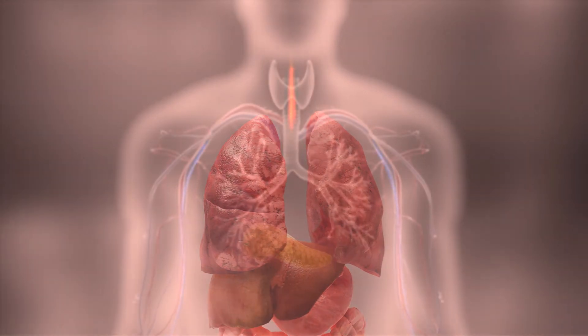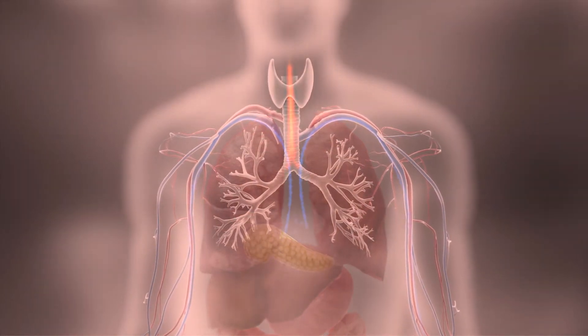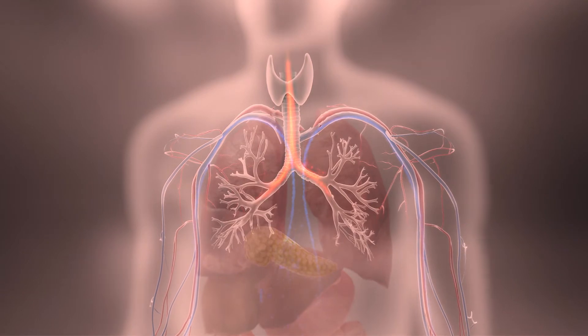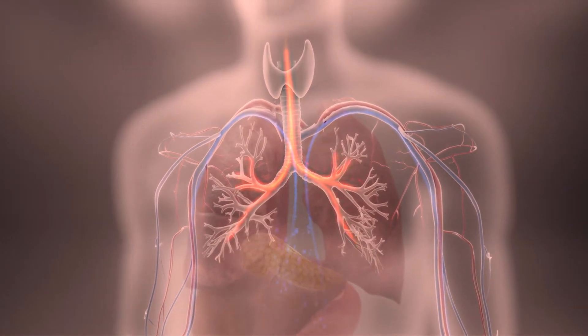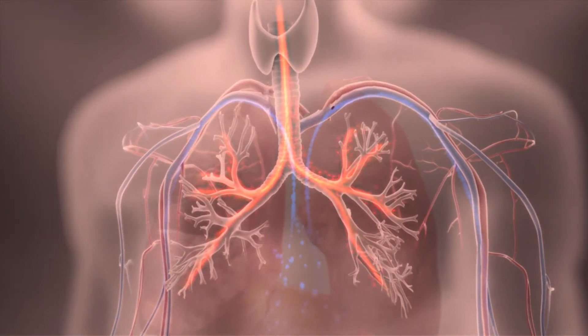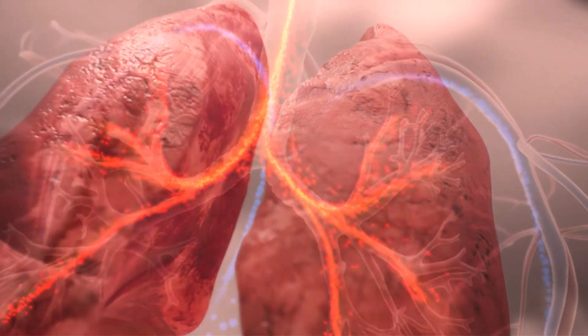Genetic therapies for CF can be inhaled or given through an IV. However, getting these therapies into the correct cells in the lungs is not easy, and each of these delivery methods involves specific challenges.